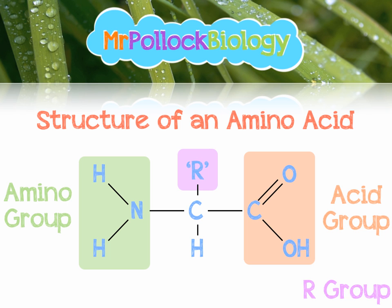We've also got the R group, which can change depending on which of the naturally occurring amino acids we're looking at. The examiner will ask you to identify these key groups, but they won't always be in the places that we see here. The amino group might be on the right, the R group might be on the bottom, the whole molecule might be rotated through 90 degrees. So you need to know what you're looking for: the amino group is NH2, the carboxylic acid group is COOH, and the R group is whatever is opposite the lone hydrogen on the central carbon.